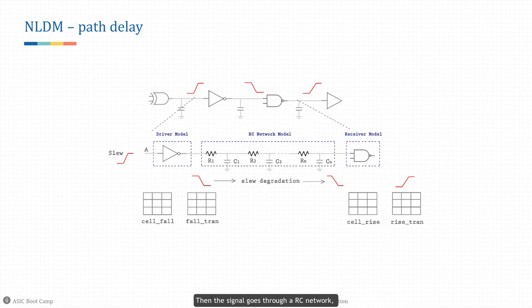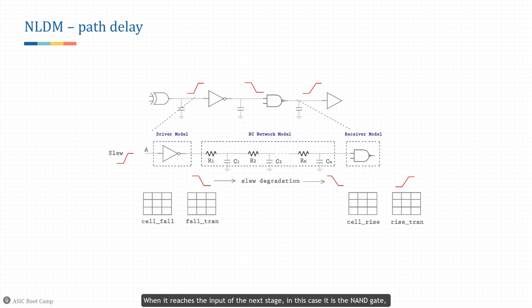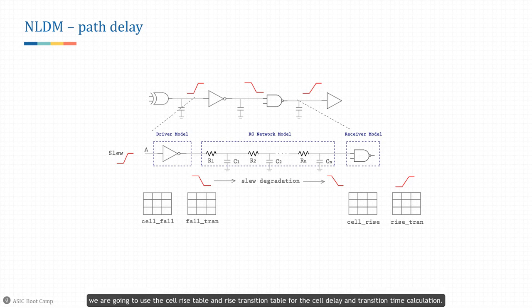Then the signal goes through an RC network, which will widen the transition time even further — this is called slew degradation. When it reaches the input of the next stage — in this case the NAND gate — the slew is used as the input transition to the NAND gate. Since the NAND gate also has a negative unate arc, we are going to use the cell rise table and rise transition table for cell delay and transition time calculation.